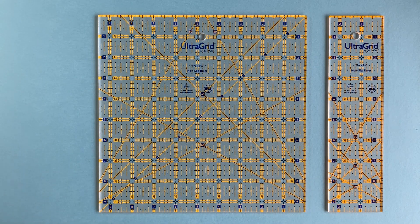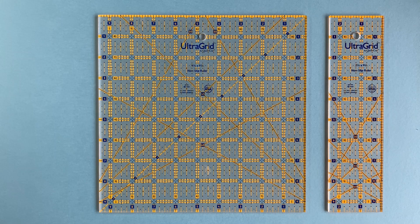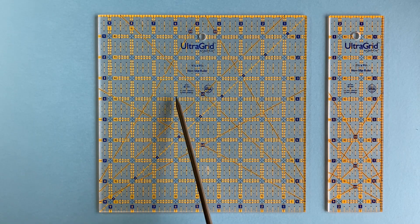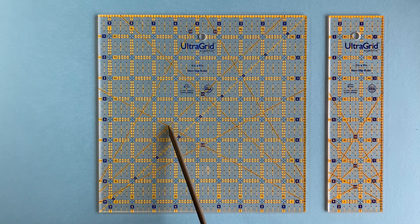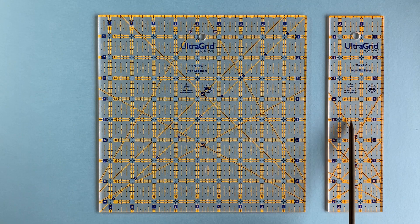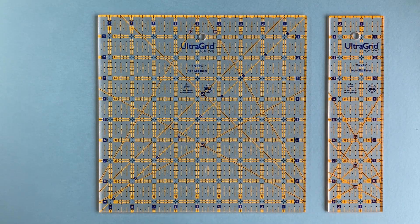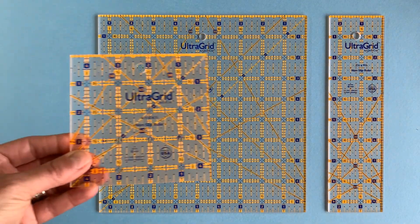Our UltraGrid non-slip rulers are available in popular sizes and feature easy-to-see orange and blue translucent markings. The translucent colors allow you to work with both light and dark fabrics. On the back of each ruler is our exclusive non-slip grip coating.